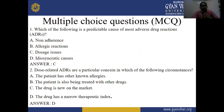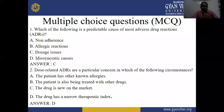MCQ Question 1: Which of the following is a predictable cause of most adverse drug reactions? (a) Non-adherence, (b) Allergic reactions, (c) Doses issue, (d) Idiosyncratic causes. The right answer is C — doses issue. Question 2: Dose-related adverse drug reactions are a particular concern in which circumstance? Options: (a) patient has other non-allergies, (b) patient is being treated with other drugs, (c) drug is new on the market, (d) drug has a narrow therapeutic index. The right answer is D — narrow therapeutic index.